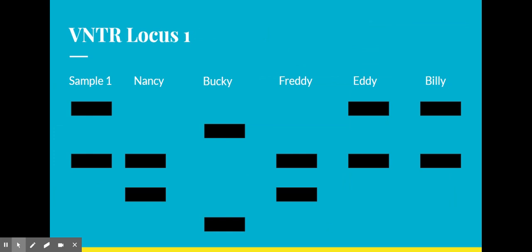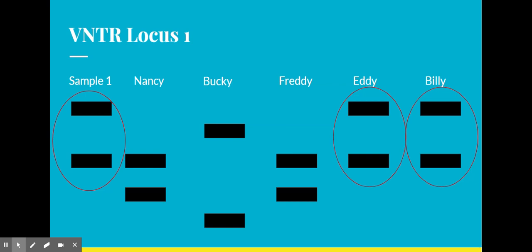Let's look at the VNTR for locus one. We can see that sample one lines up with Eddie and Billy, meaning that in both copies of the allele for sample one, Eddie and Billy, their allele lengths are the same. This means that their DNA is consistent with sample one, and that Nancy's, Bucky's, and Freddie's is not — meaning that Nancy, Bucky, and Freddie are not the suspects.